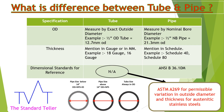Tube thickness is mentioned in gauge or mm — for example, 18 gauge equals 1.21 mm and 16 gauge equals 1.6 mm. Whereas in pipe, thickness is mentioned in terms of schedule, for example schedule 40 or schedule 80.